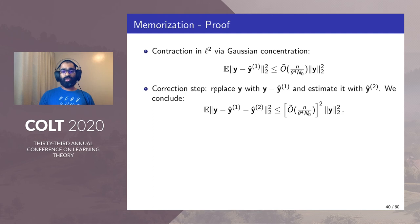After this correction step we replace y with y - ŷ₁ and we estimate it with ŷ₂ similarly and therefore we can conclude that after the second correction step we have a contraction by a squared factor.